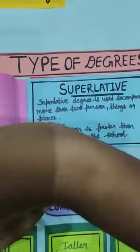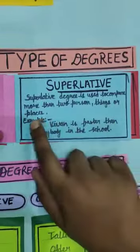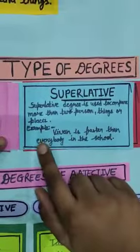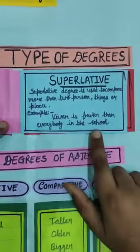And now, last, what is superlative degree? Superlative degree is used to compare more than two person, things or places. Example, Vyvan is faster than everybody in the school.